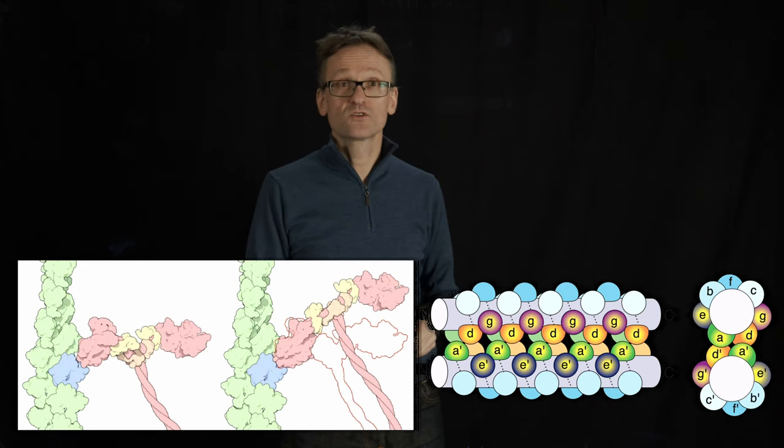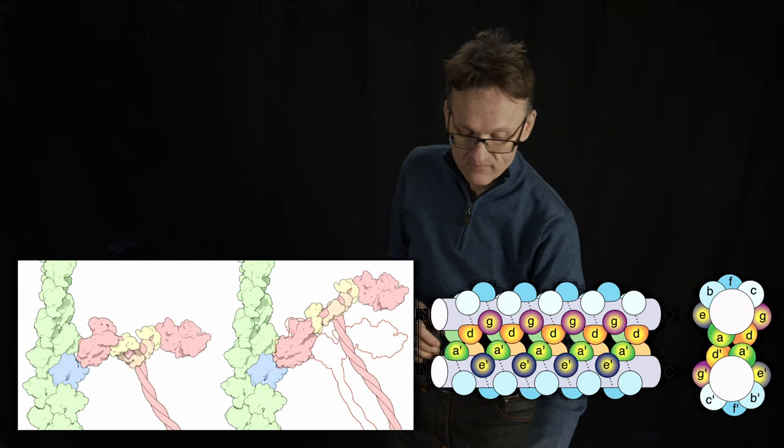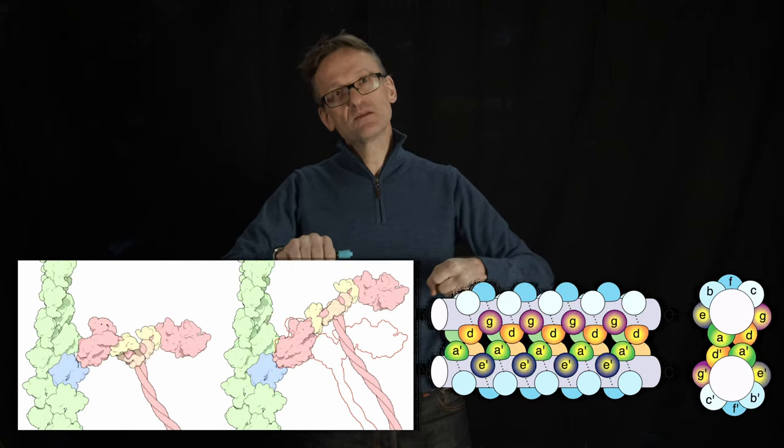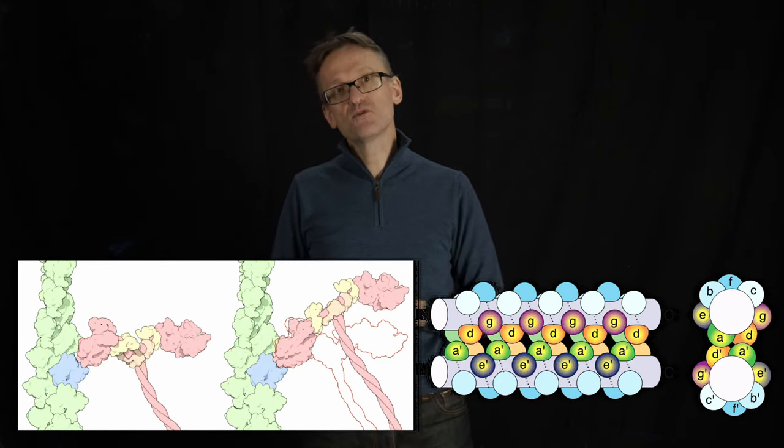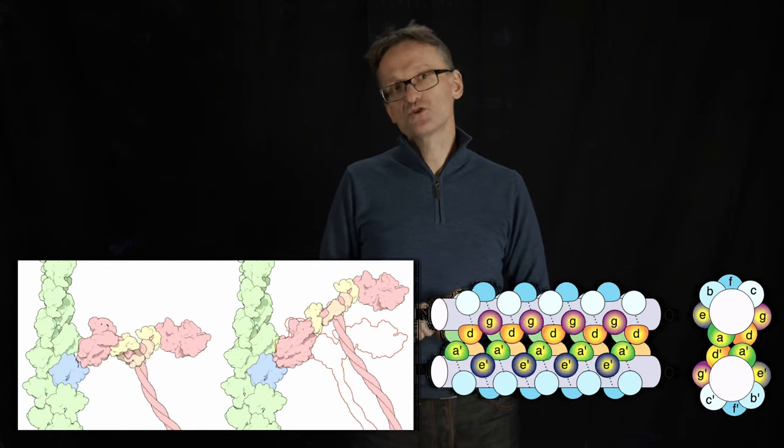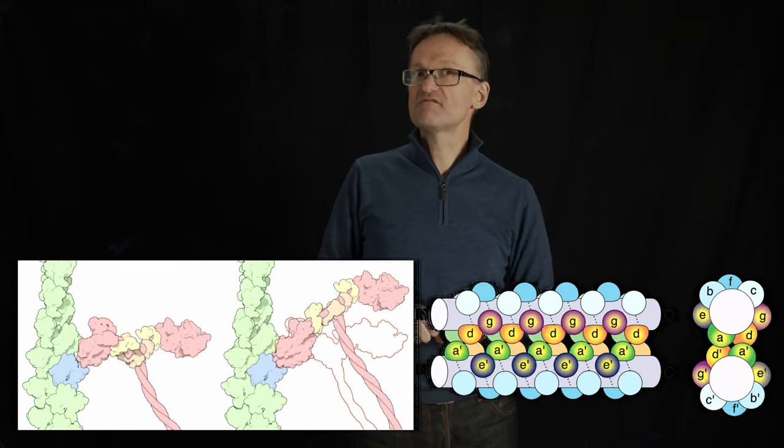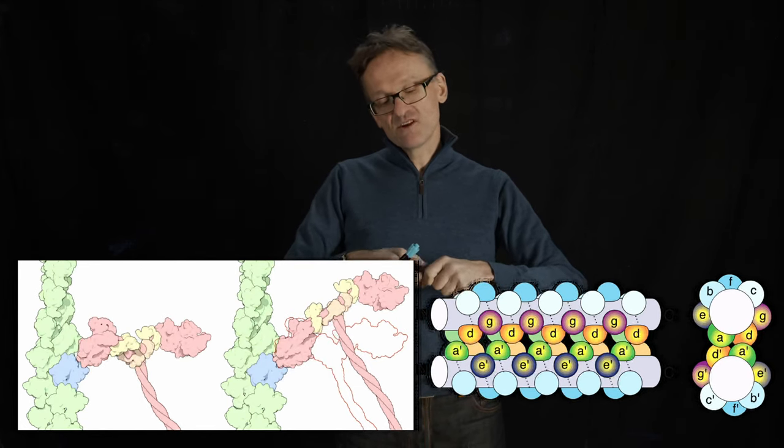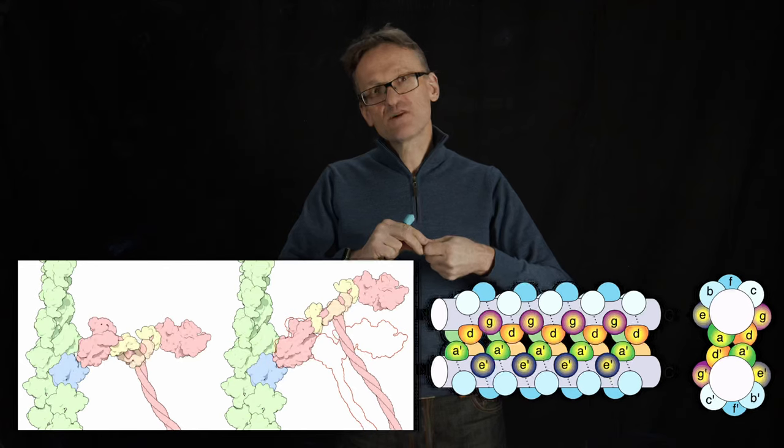This is called coiled coil. So if I stretch the helices just a little bit and instead of having 3.6 residues per turn, I go down to 3.5 residues per turn. That means that each turn is a little bit tighter now, right?